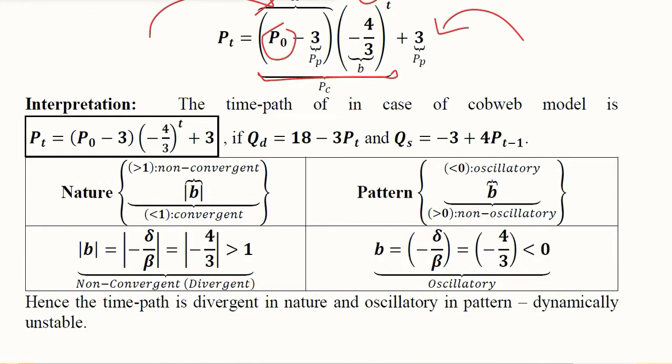The time path is now developed in case of the Cobweb model and it is equal to this, and it was basically based upon this demand function and the supply function.